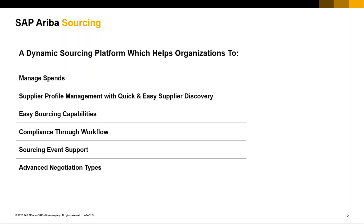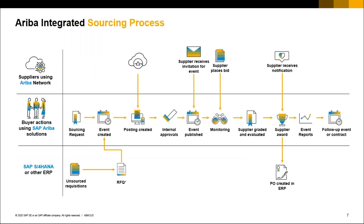With sourcing event support from SAP Ariba, even if you are creating an RFP or auction, SAP Ariba is always available to give you support — what are the best practices, what have you done wrong, what are actionable items. With SAP Ariba Sourcing you also get advanced negotiation types, starting from RFI, RFP, and going to auction. Even with SAP Ariba, you don't only have to buy things — you can always sell items using the forward auction capabilities.